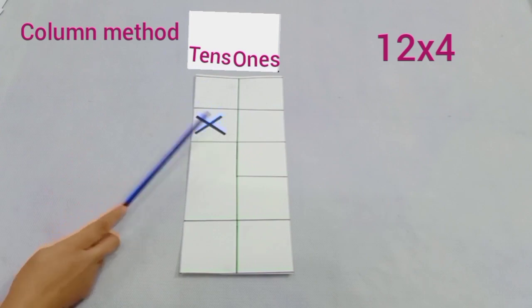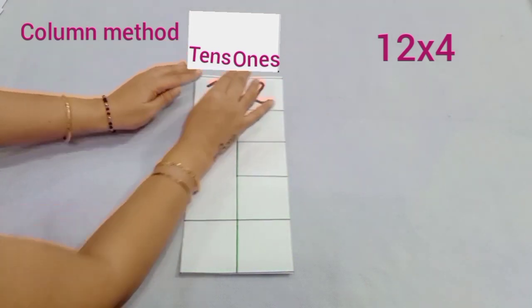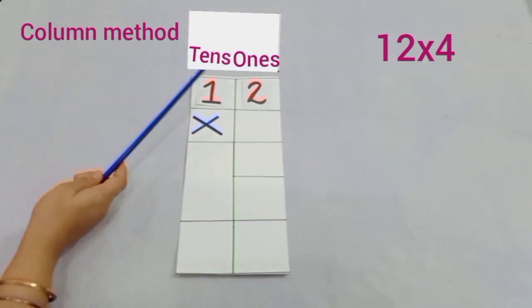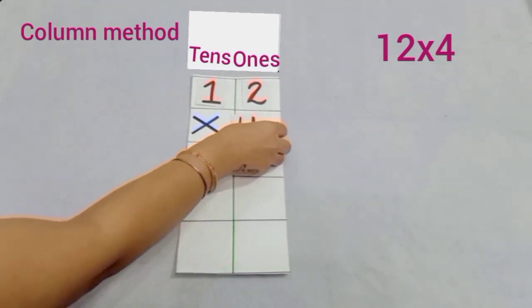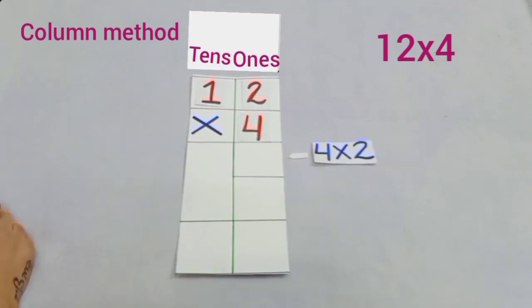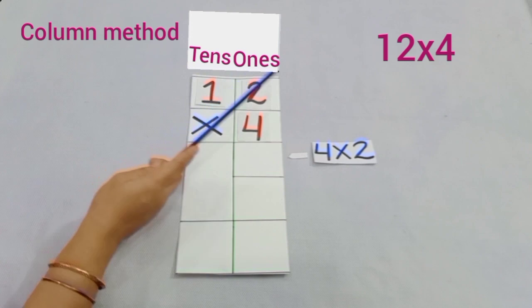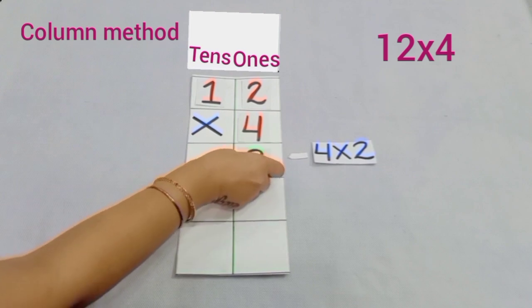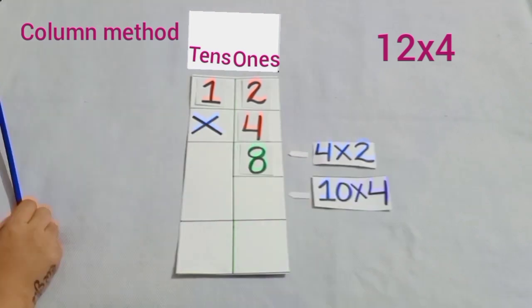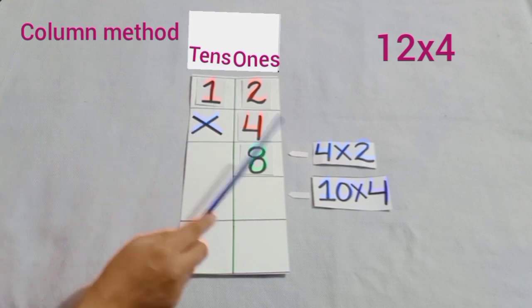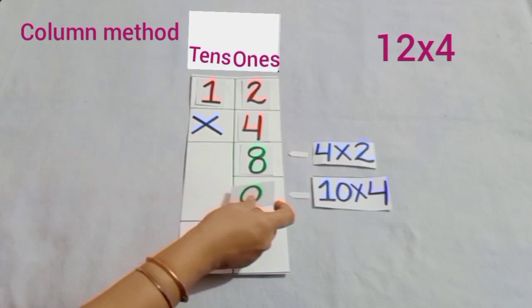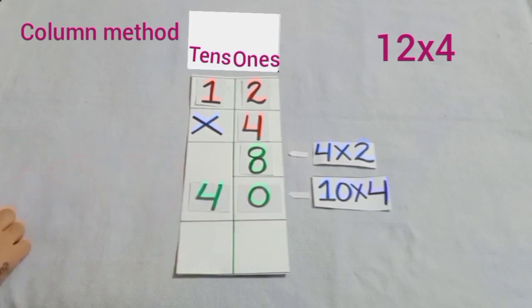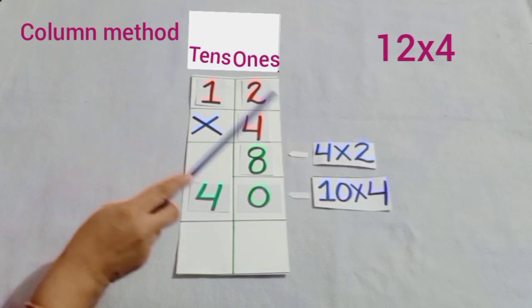Now, we will solve 12 into 4 in this way also. Firstly, we will write 12, and now we have to multiply this 12 by 4. So, firstly at ones place, we have 4 into 2, and this is equal to 8. Now, at tens place, we have 1, and 1 means 10 ones. After multiplication, we get 10 into 4 is equal to 40.